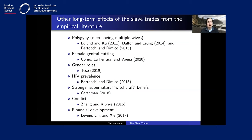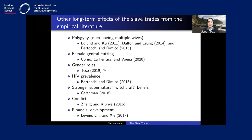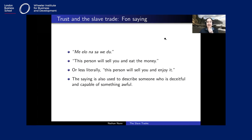For example, polygyny — men having multiple wives — has been found to have increased because of the slave trades, particularly the transatlantic, since men were primarily the sex taken, creating a gender imbalance. Female genital cutting, gender roles, HIV prevalence, stronger beliefs in traditional religious beliefs or witchcraft, conflict, and financial development have all been associated with the slave trades.